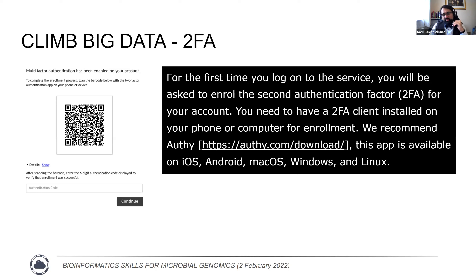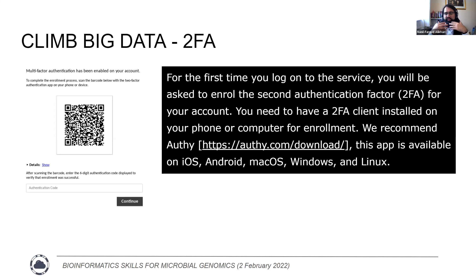When you first log in, you'll get a multi-factor authentication screen. You need a third-party app — we recommend Authy, it's lightweight and easy to use. You use that app to scan the QR code and it will show you a six-digit code that you enter when prompted. Microsoft Authenticator and Google Authenticator should also work, but Authy is the one we've tested and know for sure works.